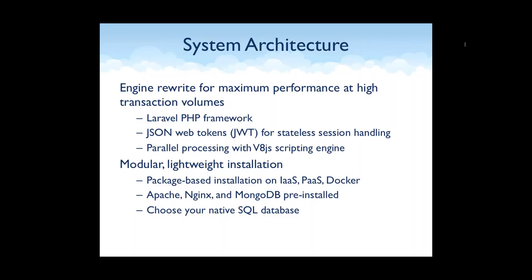We stuck with V8JS — Google's open source scripting engine for JavaScript — which is great for parallel processing. V8 at its heart is a sandbox scripting engine, and you can parallel process API calls. The goal with the system architecture was to make it easy to scale out horizontally or vertically to any load you need with a really fast API response. We also wanted more package-based installation — easy to install what you need, such as user management as a module, and easy to install on infrastructure-as-a-service like Amazon, platform-as-a-service like Bluemix, OpenShift from Red Hat, and also a really good Docker package.